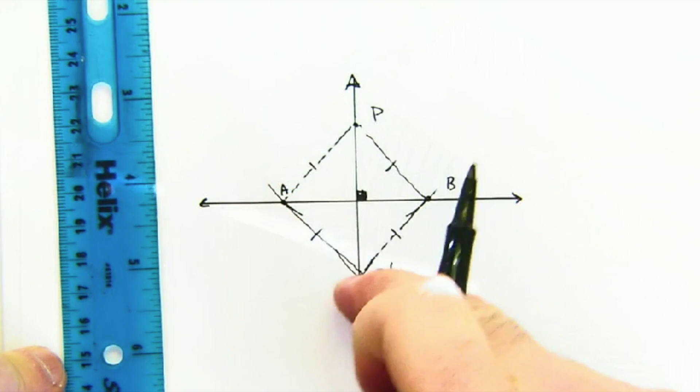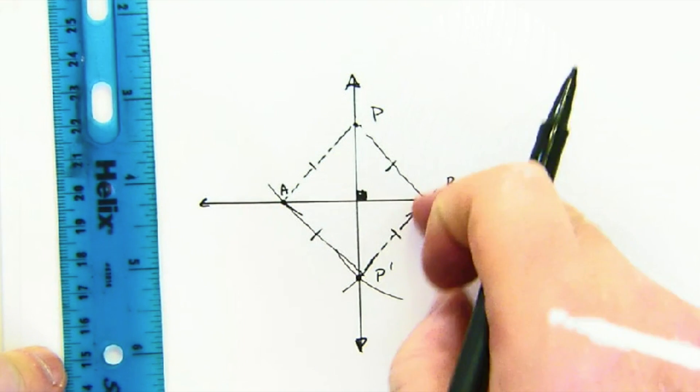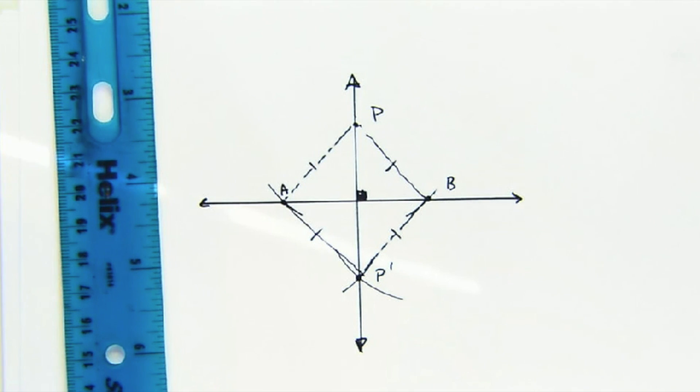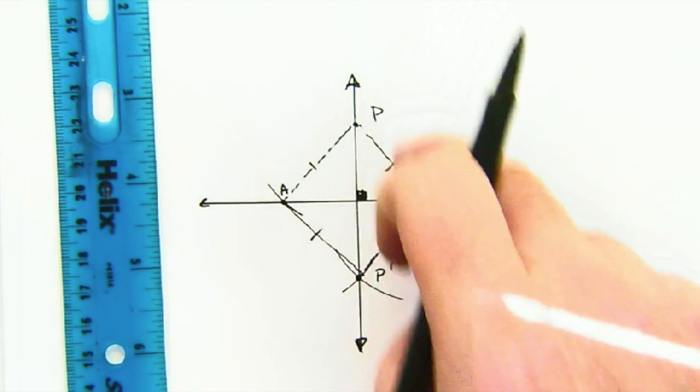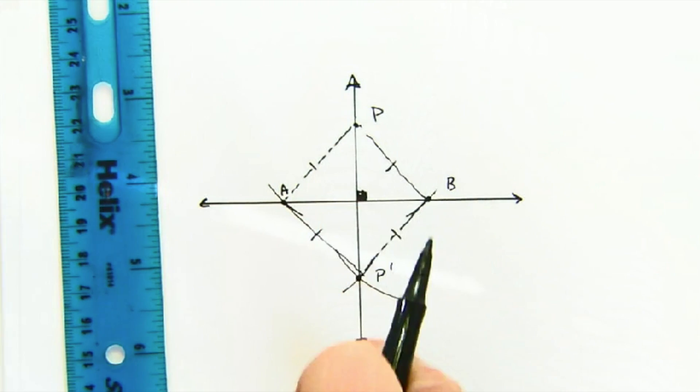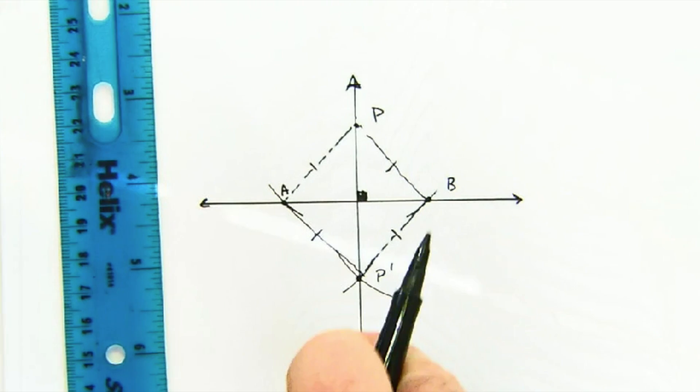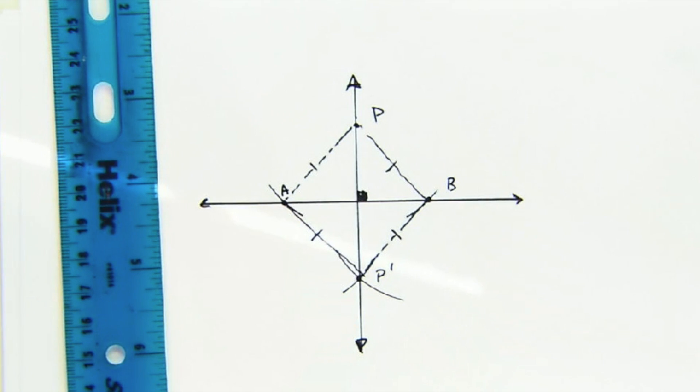We create this beautiful rhombus-like shape behind the scenes. We don't normally draw in these lines, but one of the properties of a rhombus is that the diagonals are perpendicular to each other. Another cool little trick.